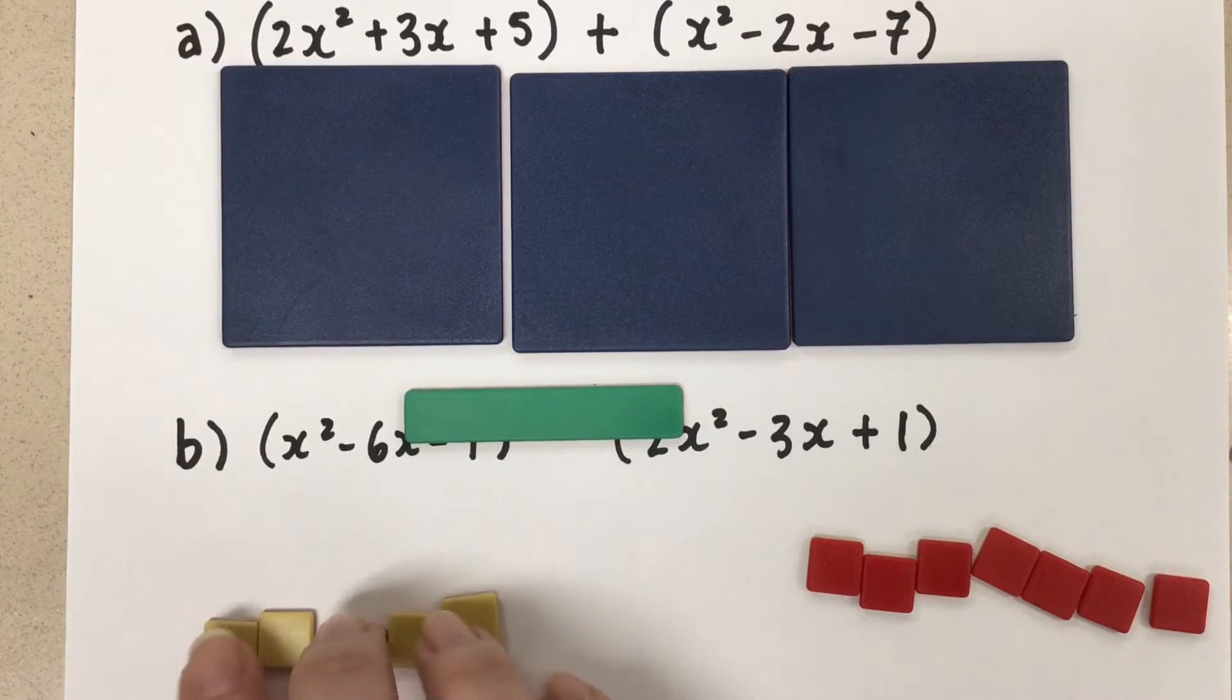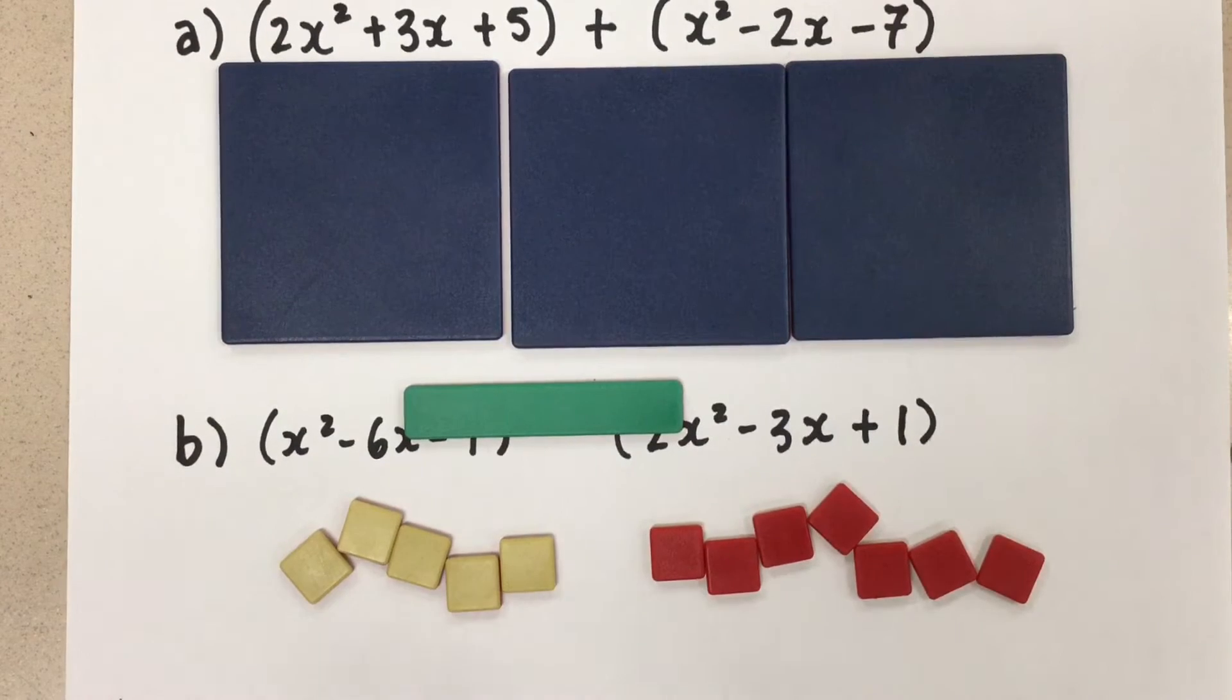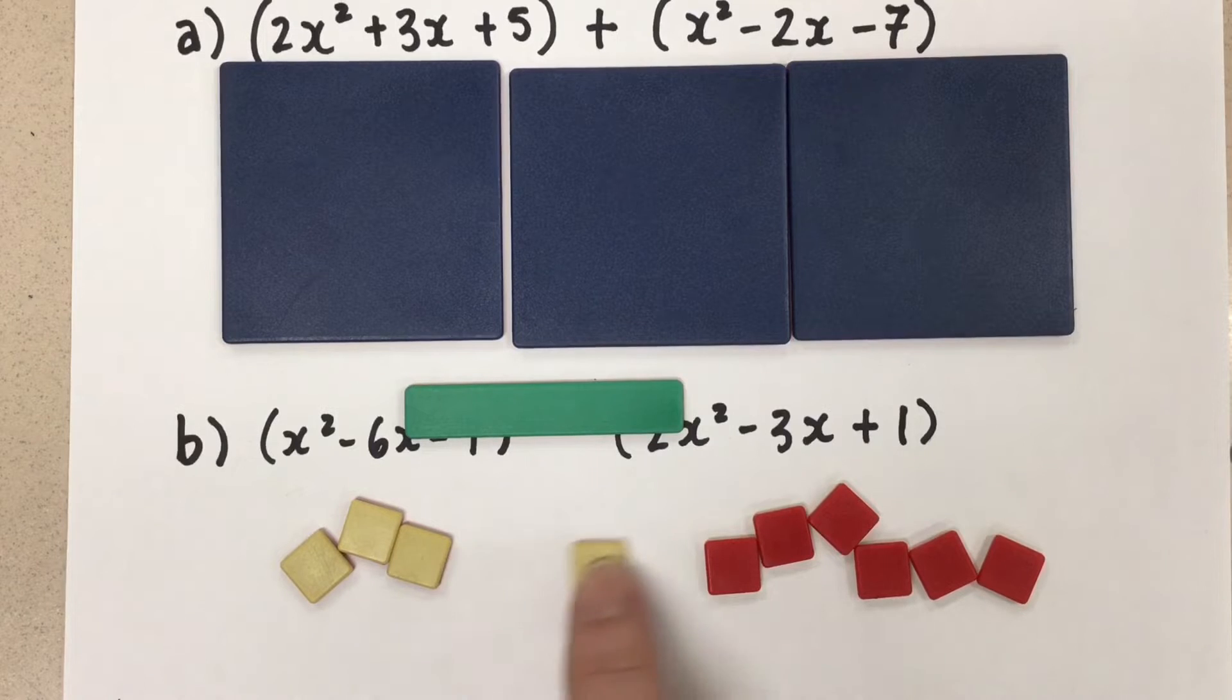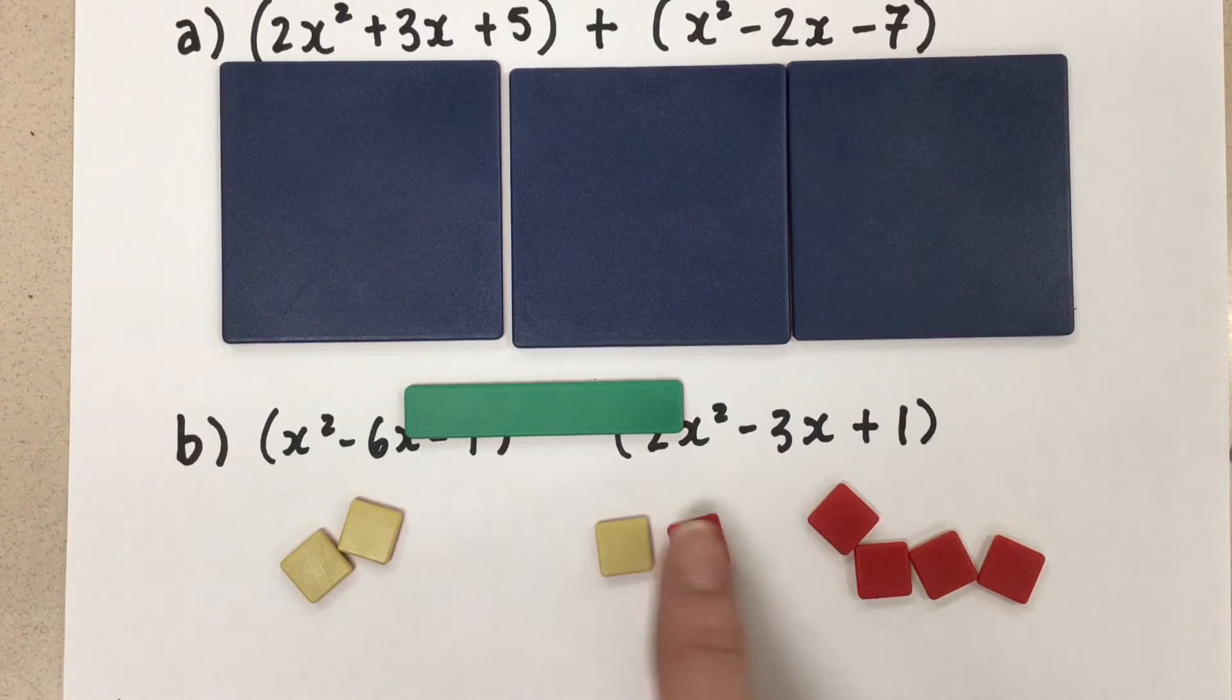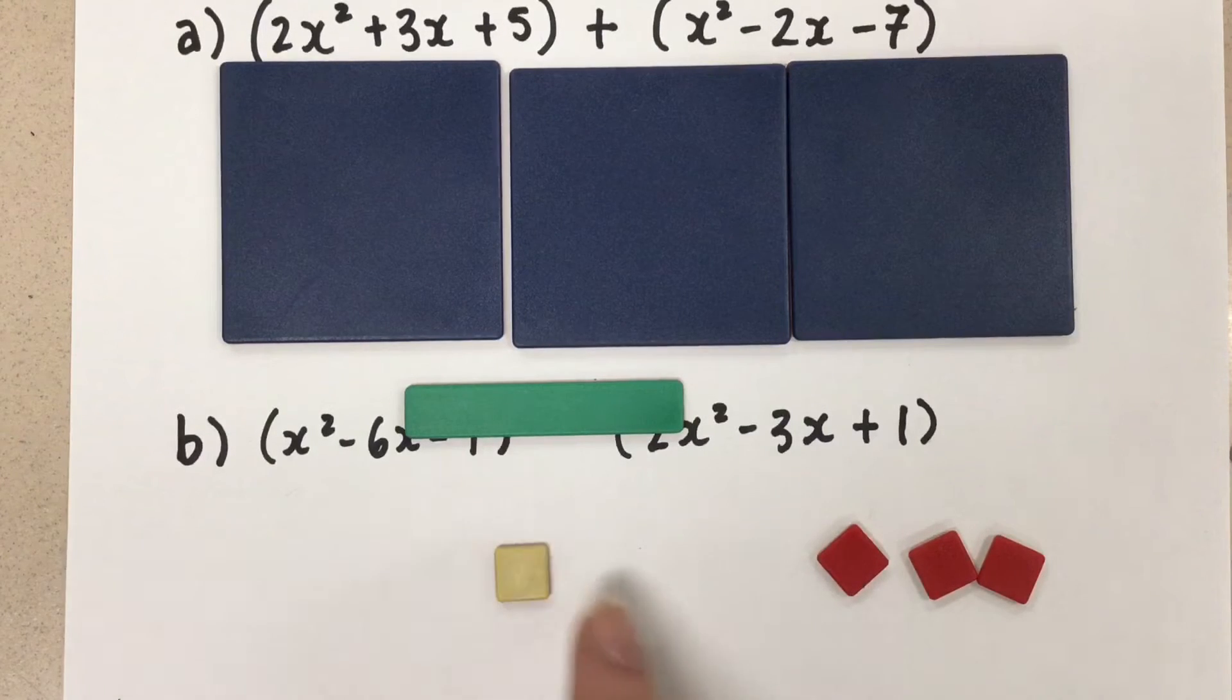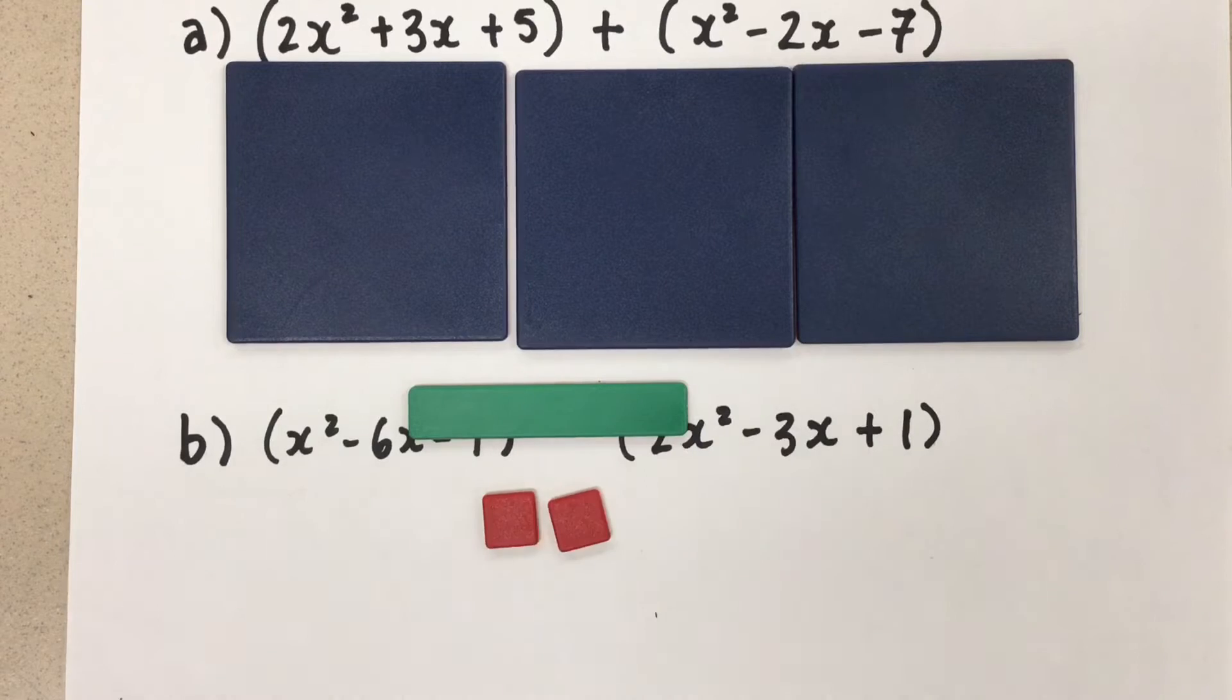And then finally, our 1's, we had 5 positive 1's, and then we had 7 negative 1's. So if we do our 0 pairs again, a positive 1 and a negative 1 makes 0. We remove the zero pairs, and what are we left with here? Just negative 2.